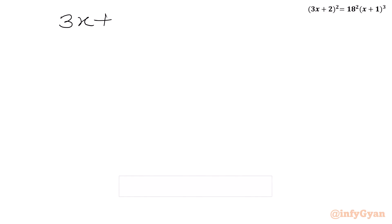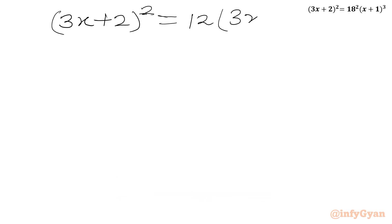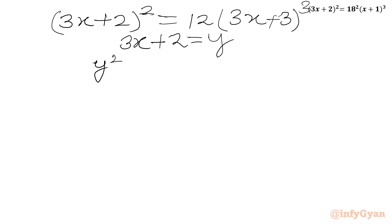So I will write our equation: (3x + 2)² = 12(3x + 3)³. Now with 3x + 2 = y, the equation becomes y² = 12 times (y + 1)³.